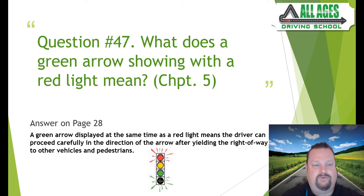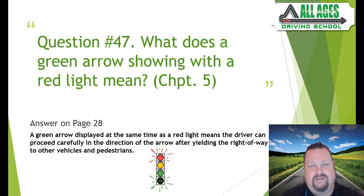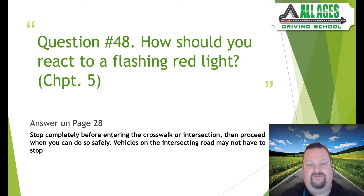Question number forty-seven: what does a green arrow showing with a red light mean? Chapter five, answer on page 28. A green arrow displayed at the same time as a red light means the driver can proceed carefully in the direction of the arrow after yielding the right of way to other vehicles and pedestrians. This is likely to appear on your road rules or road signs test.